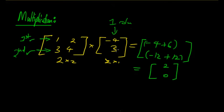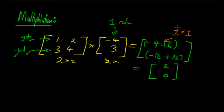If there is a second column in the second matrix, you repeat the process for that column too, using each row of the first matrix.